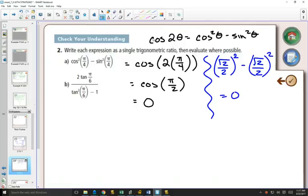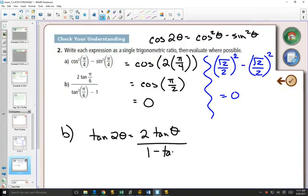Now in B, if we recognize that we've got 2 tan pi over 6 over 1 minus tan squared of pi over 6, that this matches up perfectly with the double angle formula for tan. Tan 2 theta is equal to 2 tan theta over 1 minus tan squared theta. Well, does it match up perfectly? Basically, we've got the 2 tan theta on the top, but the bottom doesn't match up. We need a 1 minus tan squared. They have tan squared minus 1.